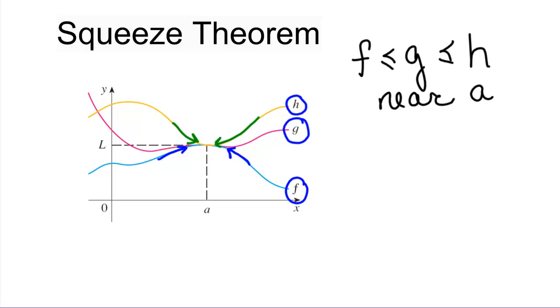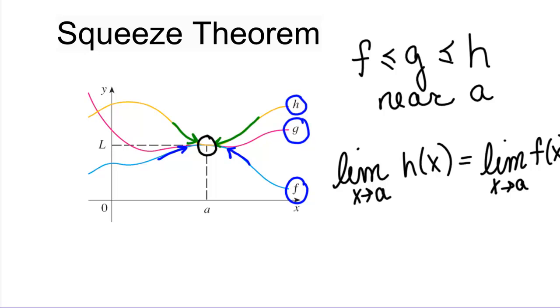If we happen to have g squeezed between h and f, and we have that the limit as x goes to a of h of x is the same as the limit as x goes to a of f of x, so that means both of these are going to the same point right here, approaching the same point, then we can conclude that the function we care about, g of x, has the same limit as x goes to a, because it's squished in between.